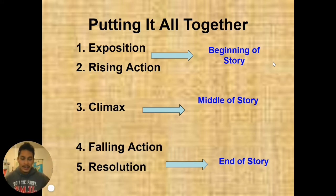Again, putting it all together, this will help you understand the parts of the plot diagram. Part one and two, exposition and rising action, is in the beginning of the story. The climax is that middle portion of the story. Four and five, the falling action and the resolution, that is the end of the story.